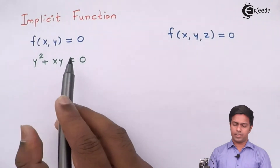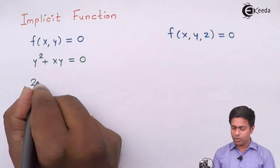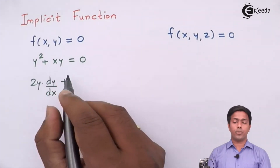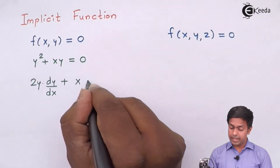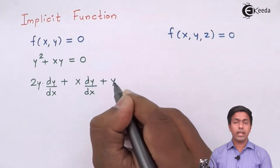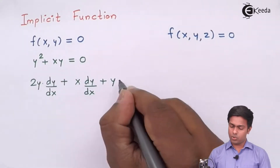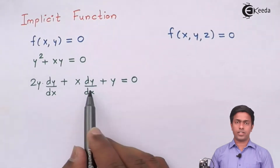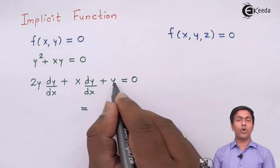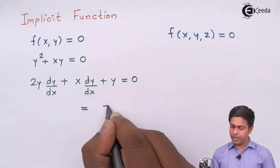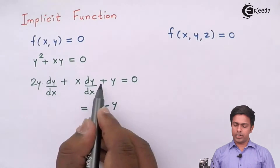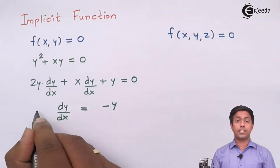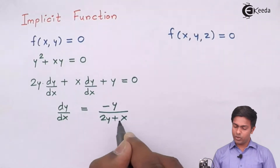Differentiating y² with respect to x gives 2y·(dy/dx). Next, applying the UV rule on xy gives x·(dy/dx) + y·1. Setting this equal to zero, we take all terms with dy/dx together: (2y + x)·(dy/dx) = −y. The y term moves to the right-hand side as negative y, and the bracket 2y + x goes to the denominator.